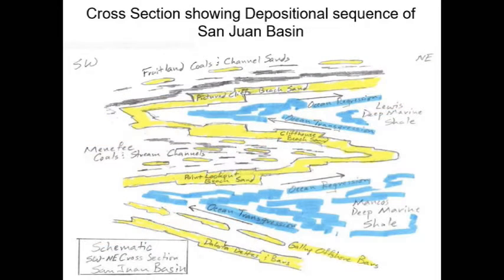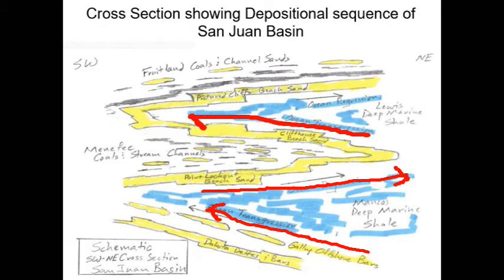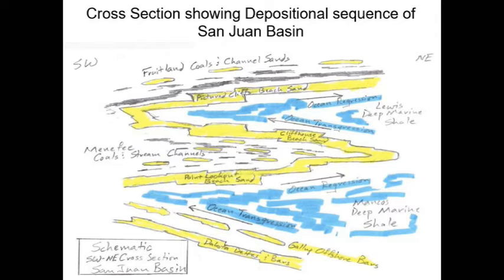During the Cretaceous era, the ocean advanced and receded, and advanced and receded again before pulling back to the shorelines of today. Most of the larger grain sandstones were deposited near the shoreline at the time, in deltas and beaches and bar sands and such, while the finer grain sediments were deposited in the deeper oceans, forming the deep marine shales.